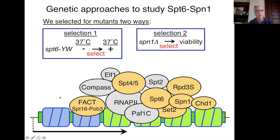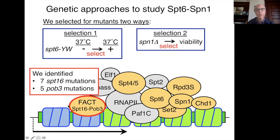One important thing this analysis has told us is that there are likely multiple mechanisms by which these mutations can be suppressed. But I'm really going to focus on FACT, because we had never seen this type of mutation in FACT before, and it was a very abundant class of suppressor — seven mutations in Spt16 and five in Pob3.